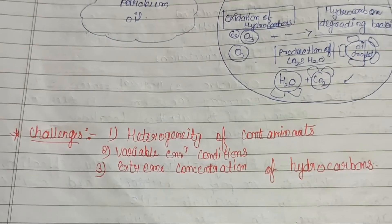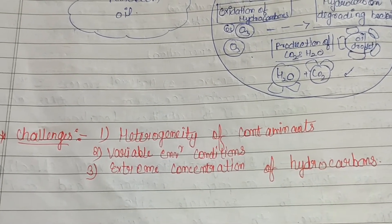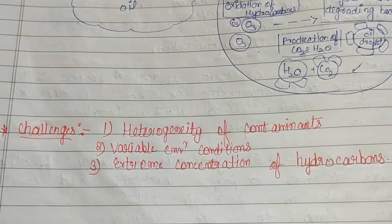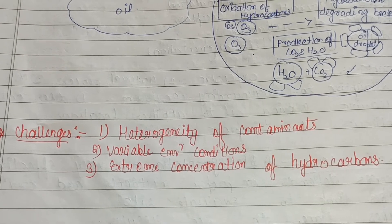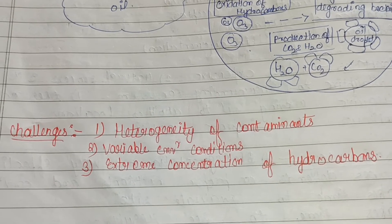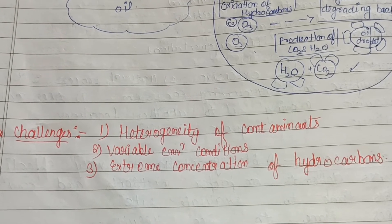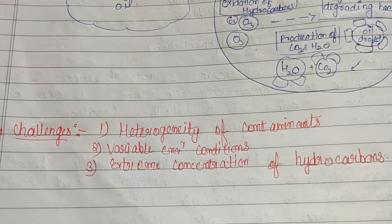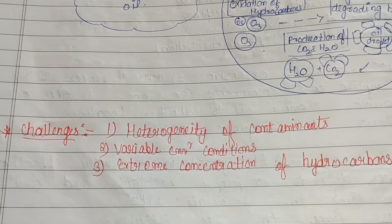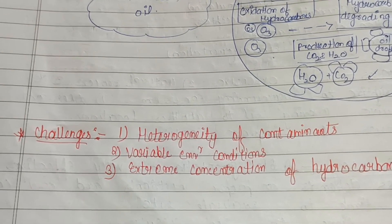There are some challenges in the bioremediation process. The first is heterogeneity of contaminants — in an oil spill, various materials are combined, not just single hydrocarbons. There are also variable environmental conditions such as high or low temperature, high or low pH, and extreme hydrocarbon concentrations that bacteria are unable to degrade properly. That covers the topic of bioremediation of marine oil pollutants. Please like, share, and subscribe to the channel.